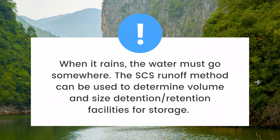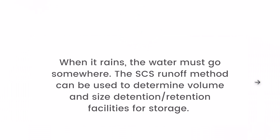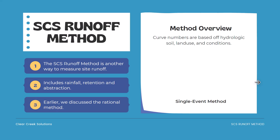When it rains, the water must go somewhere. The SCS runoff method can be used to determine volume and size detention and retention facilities for storage. We also have videos going over what detention and retention facilities are for stormwater design. Here's an overview of the SCS runoff method — it's another way to measure site runoff, and it includes variables such as rainfall, retention, and abstraction.